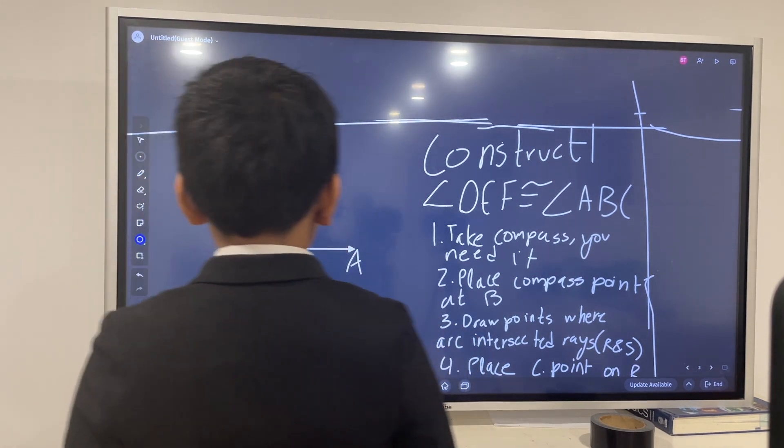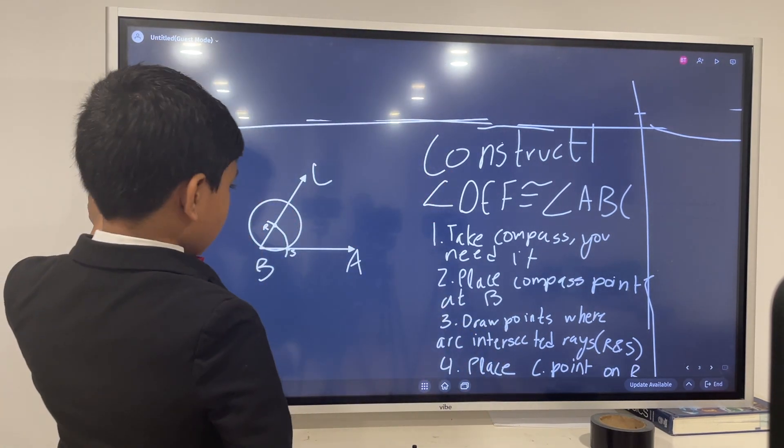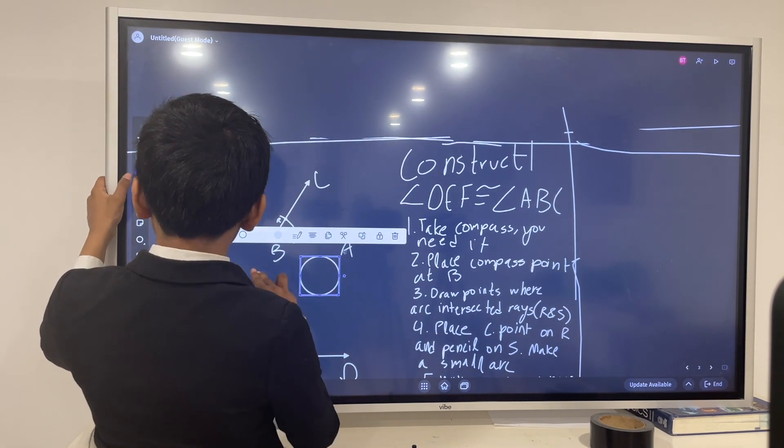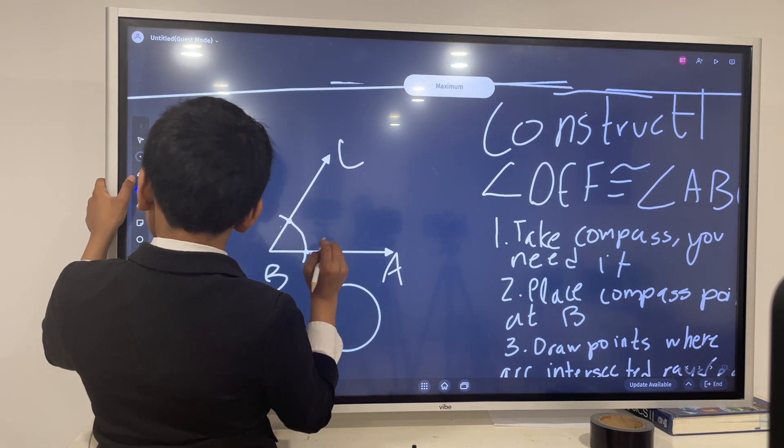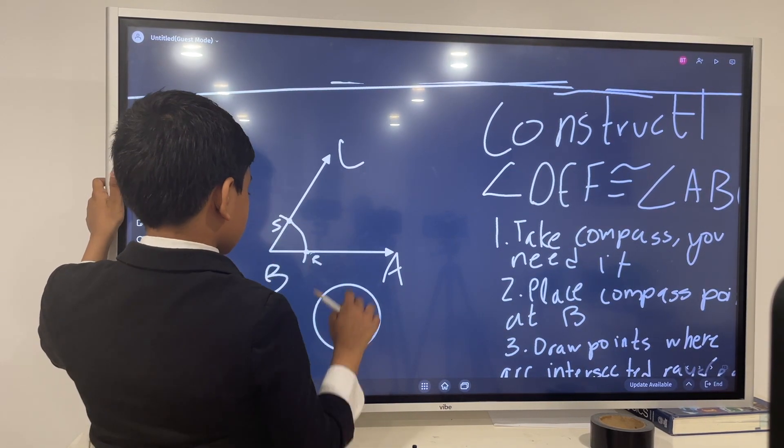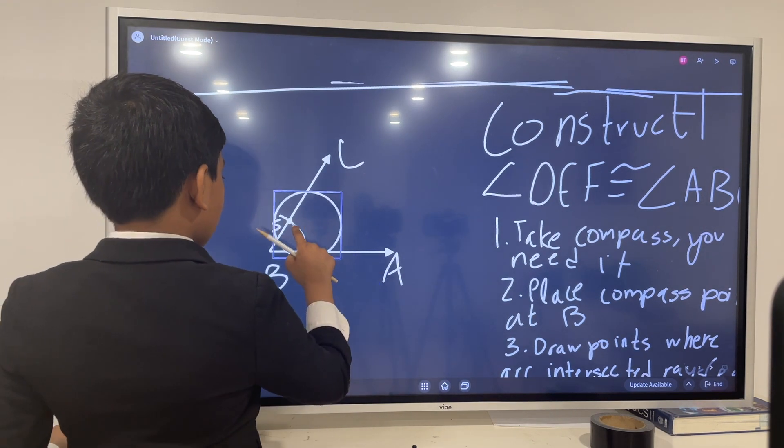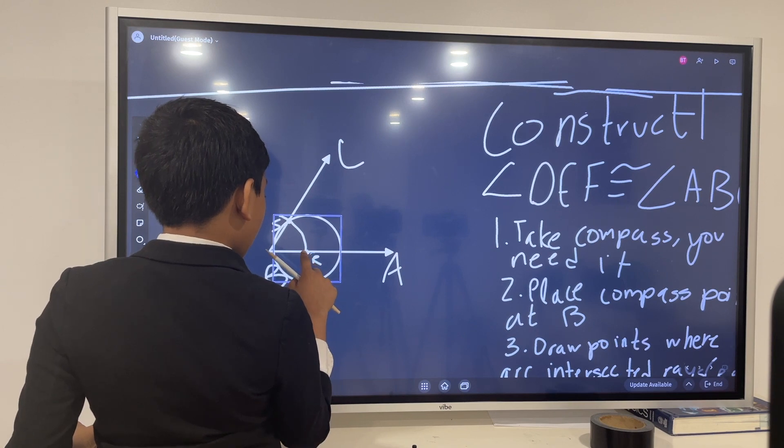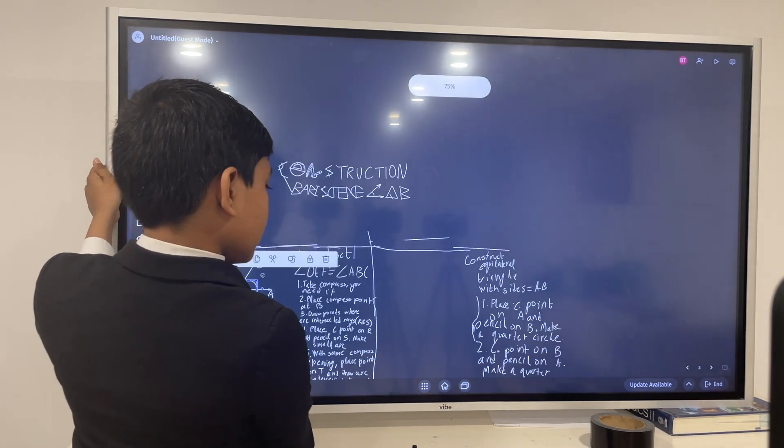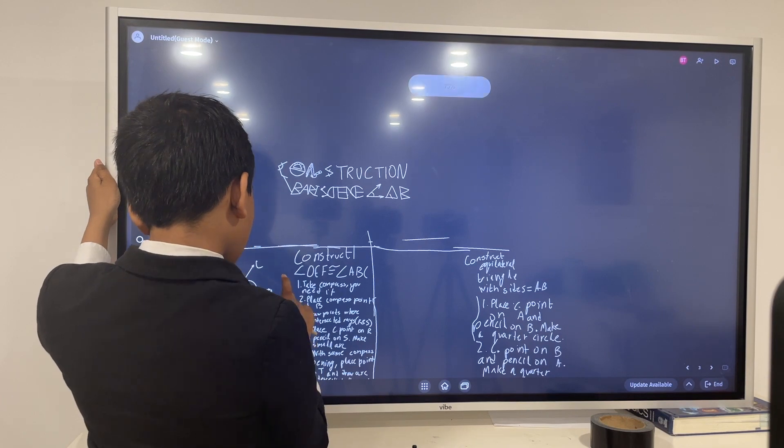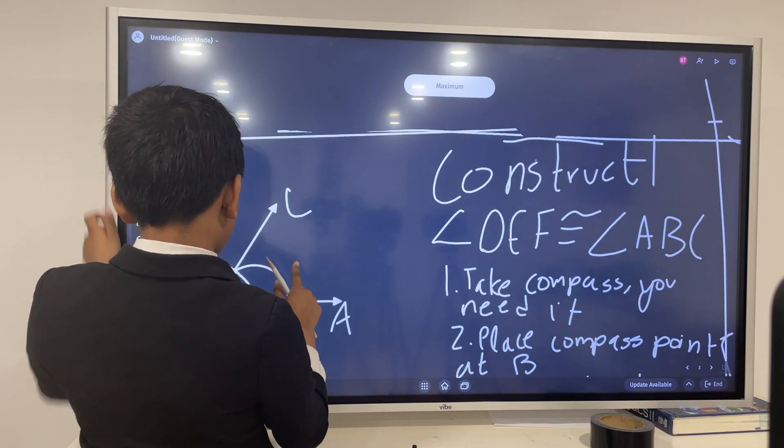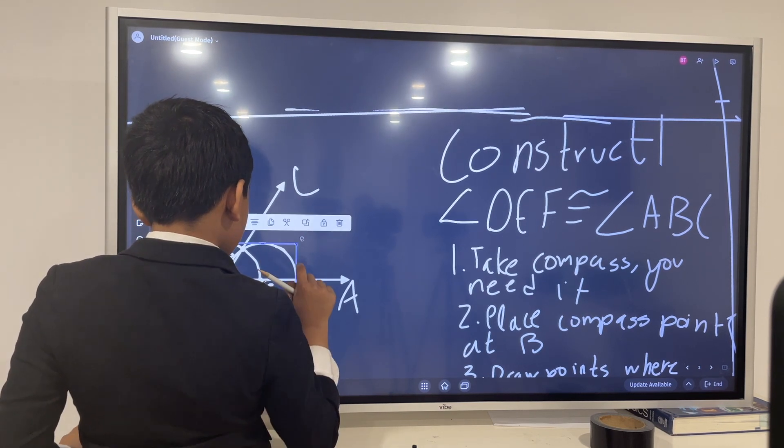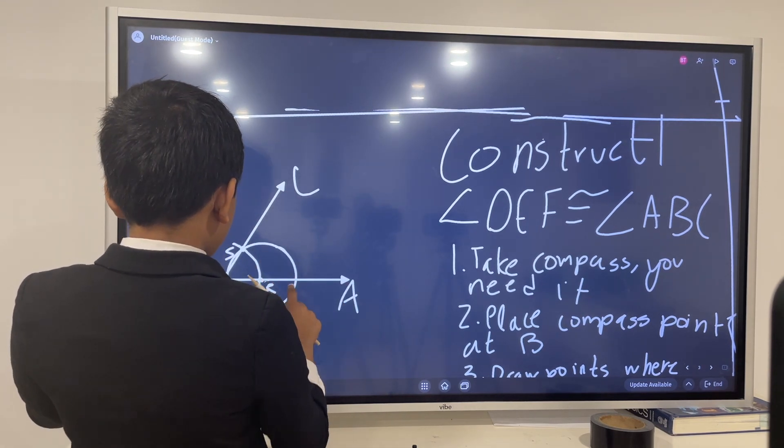So now they want us to draw a small arc. Actually, you know what, I'm going to switch up the names of the points. R and S. So now we place our compass point on R and our pencil on S, and we draw an arc, a small arc, it details.